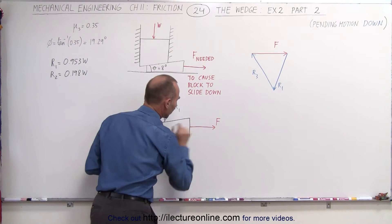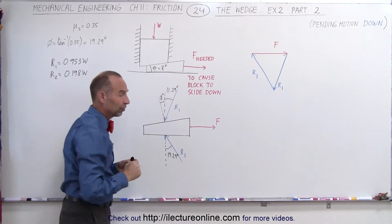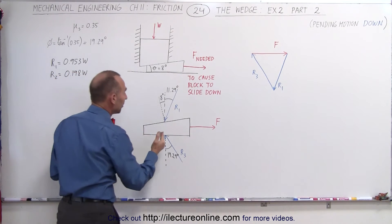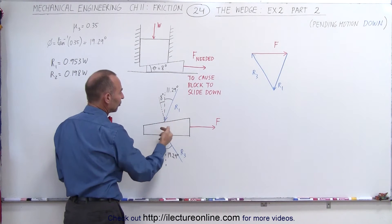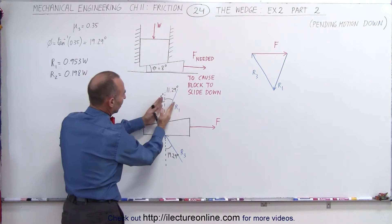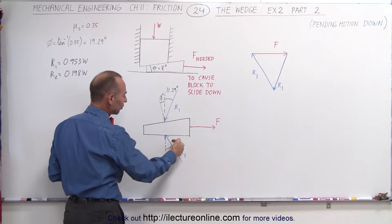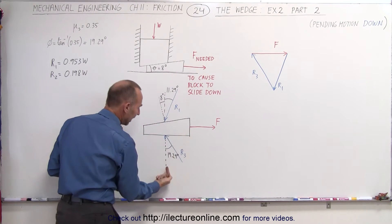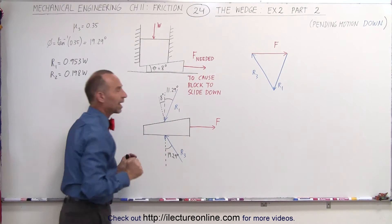The force to pull the wedge out is what we're looking for, and we know there's going to be friction on the top surface and on the bottom surface. There's also going to be what we call reactionary forces, which are the vector sum of the normal force — which is normal to the incline — and the friction force. Notice the friction force will be acting in this direction, the normal force acts in this direction, and R1, the reactionary force, is the vector sum of those two forces. For R3, there will be a friction force in this direction as you're trying to pull the wedge out, and a normal force against the surface here, so we add those two together and you get the reactionary force.